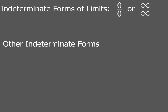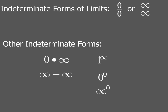Indeterminate forms for limits are going to be one of these two forms: you're either going to have 0 over 0, or infinity over infinity. Sometimes they're not in that form exactly — there might be other indeterminate forms that we'll have to manipulate to get into the form of 0 over 0 or infinity over infinity. The other indeterminate forms are 0 times infinity, infinity minus infinity, 1 to the infinity, 0 to the 0 power, and infinity to the 0 power. So if we see one of these indeterminate forms, we're going to have to do some math trickery to get it to be 0 over 0 or infinity over infinity.